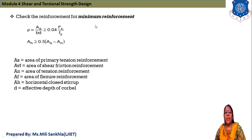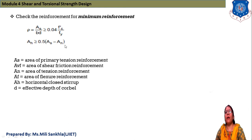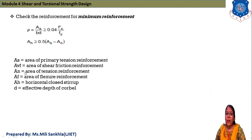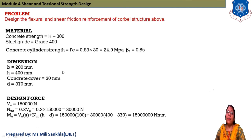Check reinforcement for minimum: rho = AS/(BD) ≥ 0.04 × F'c / Fy, and AH ≥ 0.5 × (AS − AN). Where AS = area of primary tension reinforcement, AVF = area of shear friction reinforcement, AN = area of horizontal tension reinforcement, and D = effective depth of corbel.